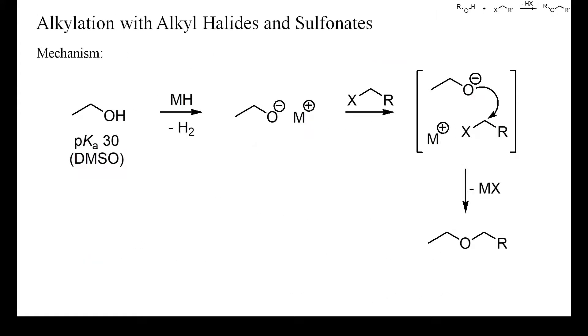In the classical Williamson ether synthesis, alcohols are first deprotonated stoichiometrically and the resulting alkoxides are then treated with an electrophilic alkylating reagent. With most electrophiles, the alkylation is a normal bimolecular nucleophilic substitution.